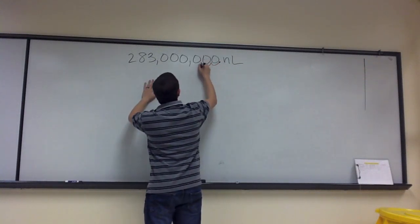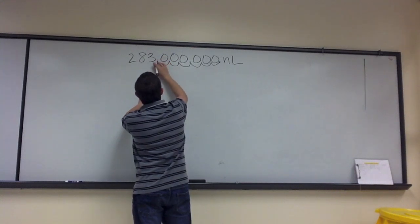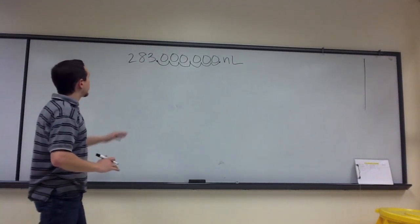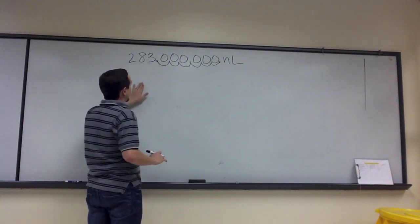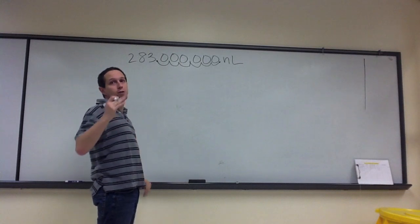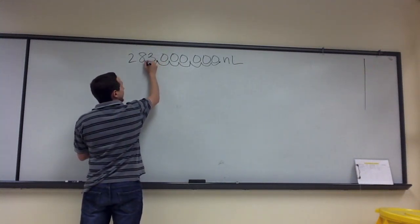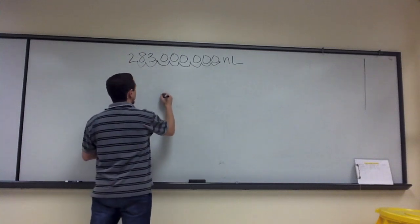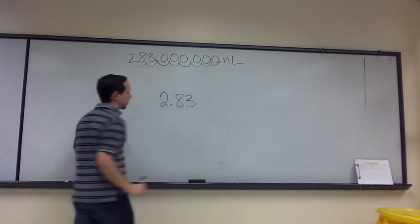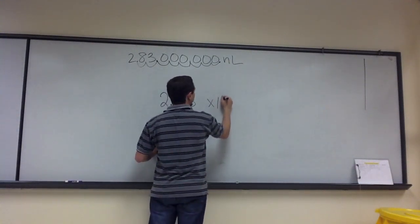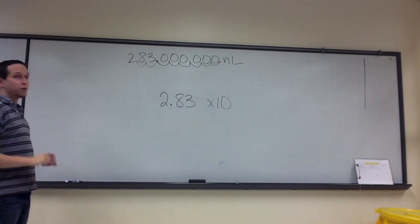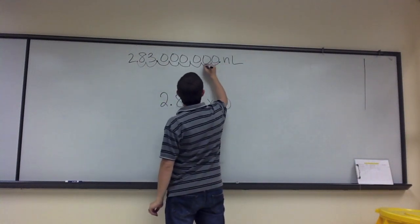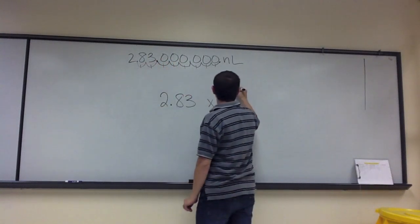A lot of people might stop early because 3 is between 1 and 9, but remember that you still have the 2 and the 8 in front of that 3, making this number 283 — much larger than 9. So I have to keep moving. That's still 28.3; if I move it one more, now I'm at 2.83. My number is 2.83, and this number is going to be multiplied by 10 to some exponent. The way I determine my exponent is by counting the number of places I moved my decimal: 1, 2, 3, 4, 5, 6, 7, 8. So, 10 to the 8.